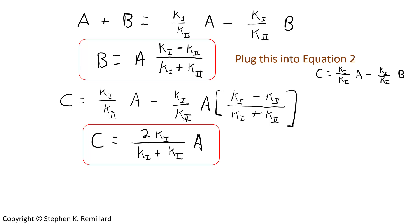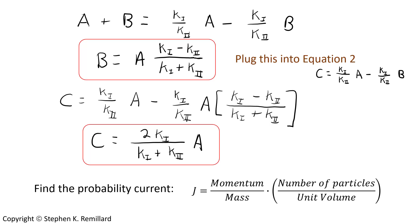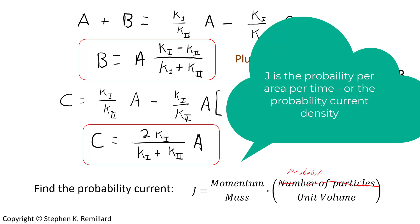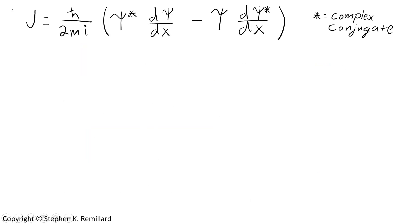Let's find the probability current. It is not electric current but very similar, and we represent it with a capital J for current density. It is momentum over mass, which is the velocity of the wave, times the number of particles per unit volume — that is, the number of particles per unit area per unit time. Since this is a probability wave, J is the probability current density, analogous to electric current density. In your quantum mechanics textbook there is an expression for current density in terms of the wave function. Go ahead and evaluate this using the wave function expressions, beginning with region one.